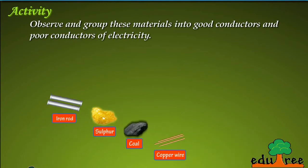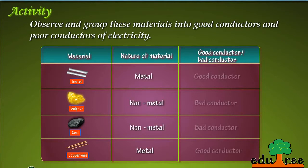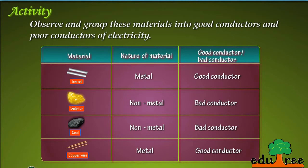Observe and group these materials into good conductors and poor conductors of electricity. Material — Nature — Good or bad conductor. Iron Rod: Metal, Good conductor. Sulphur: Non-metal, Bad conductor. Coal piece: Non-metal, Bad conductor. Copper wire: Metal, Good conductor.